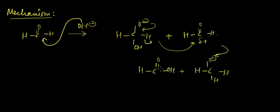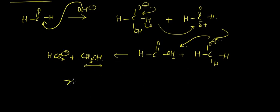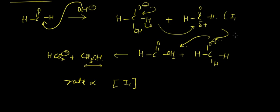Next, CH3O- takes the H+ and we get HCO2- and CH3OH (alcohol). Since the ether is stable in basic medium, this is the stable compound. Hence, the rate of this reaction is proportional to the concentration of the intermediate I1, and the reacting aldehyde HC double bond OH.